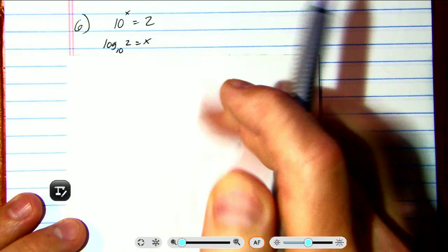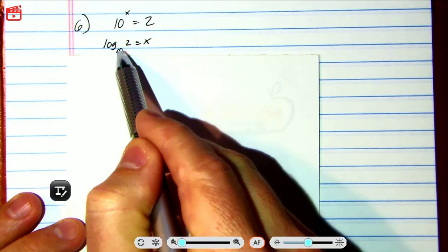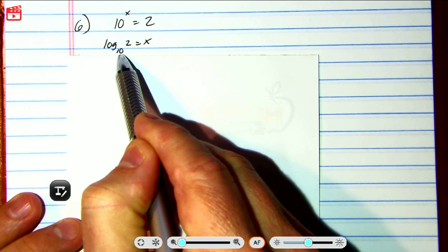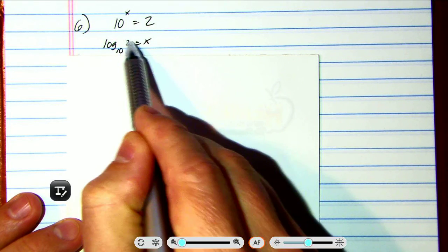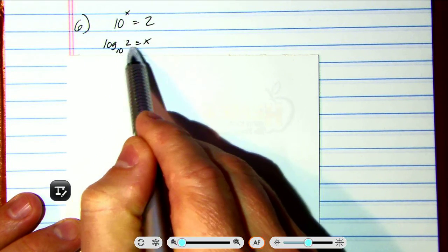So when we write log, the base is 10. So then when you change the form, you're supposed to switch sides with the 2 and the x. So now you've got log base 10 of 2 equals x.